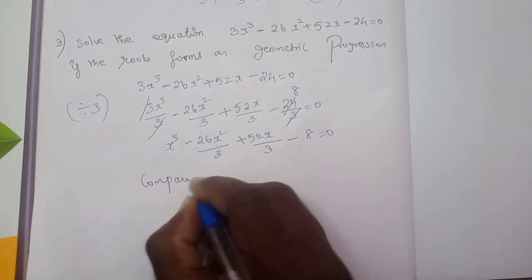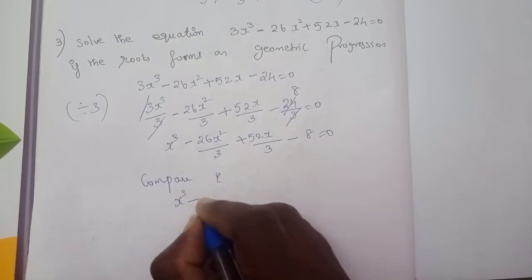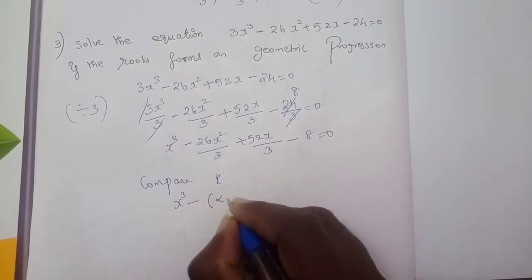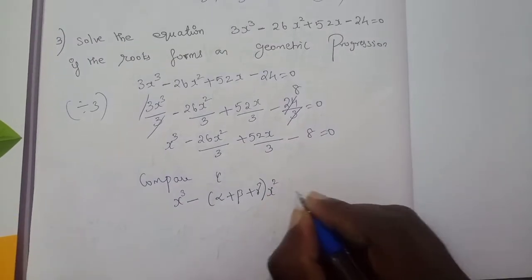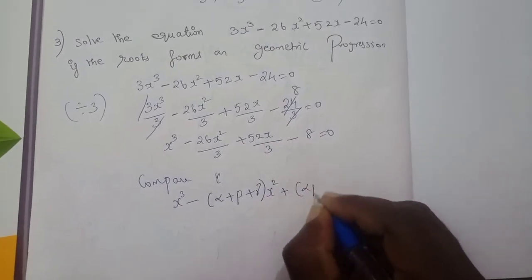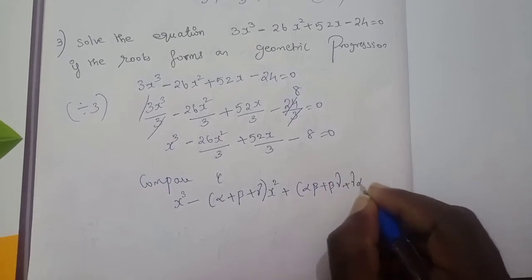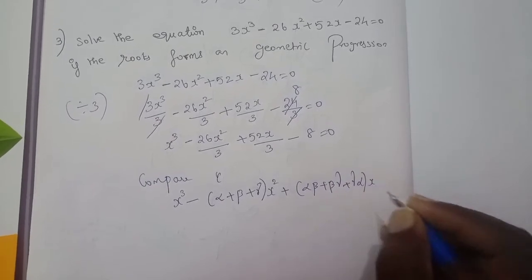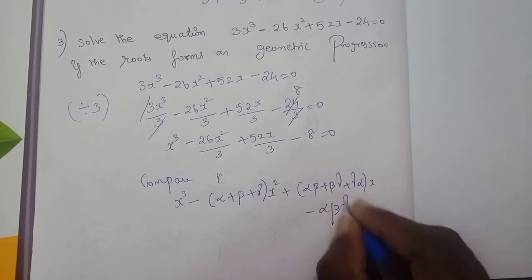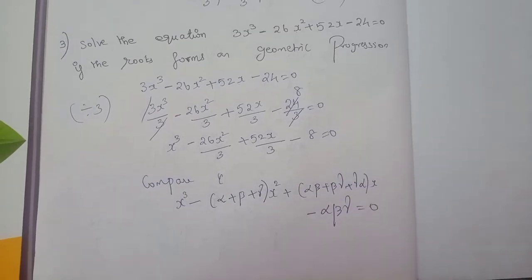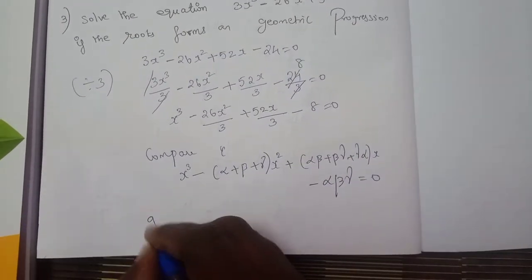Now compare with the general form of the cubic equation: x³ - (α + β + γ)x² + (αβ + βγ + γα)x - αβγ = 0.